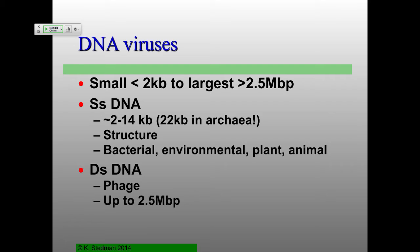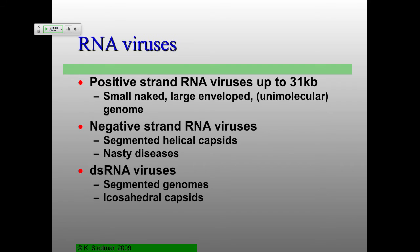Very broad brush. Which Baltimore classes are these? They're 1 and 2. RNA viruses — the other kinds of Baltimore classes. We've got positive and negative strand as well as the double-stranded RNA viruses — very much an overview here.